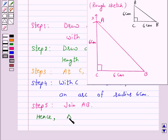Hence, triangle ABC is now obtained where the measure of angle C is 90 degrees and AC equals BC equals 6 cm. This concludes our session.